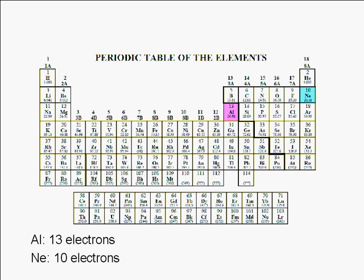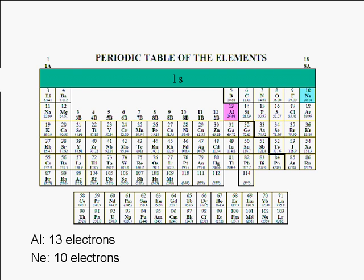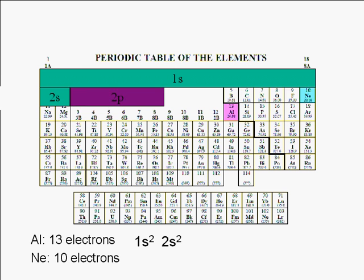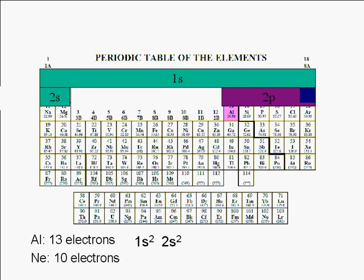Let's assign the electrons. The first subshell is the 1s subshell. We can put a maximum of two electrons in an s subshell. The next subshell is the 2s subshell. The next two electrons are assigned to the 2s subshell. The next subshell is the 2p subshell. Since a p subshell can accommodate a maximum of six electrons, we assign the next six electrons to the 2p subshell.